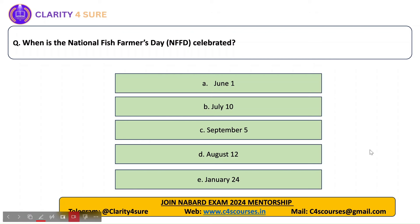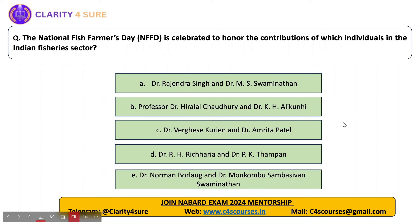When is the National Fish Farmers Day celebrated? It is celebrated on July 10 every year. Today is National Fish Farmers Day. The National Fish Farmers Day is celebrated to honor the contributions of Professor Dr. Hiralal Chaudhary and Dr. K.H. Alikuni in the Indian fishery sector.